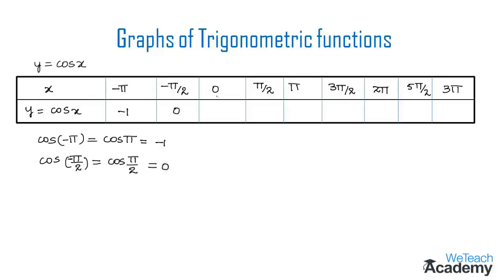Next, substituting x equal to zero: cos(0 degrees) equals 1, so y equals 1. Then for x equal to pi by 2: cos(pi by 2) equals cos(90 degrees) which is 0, so y equals zero.